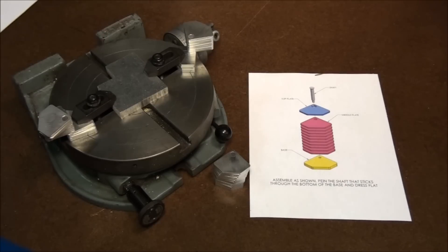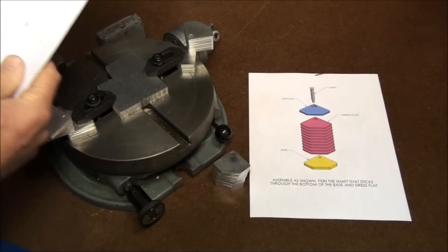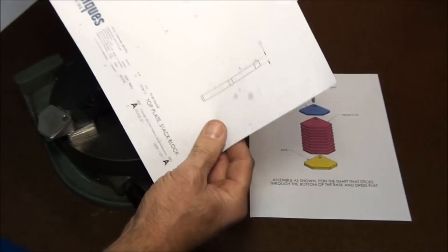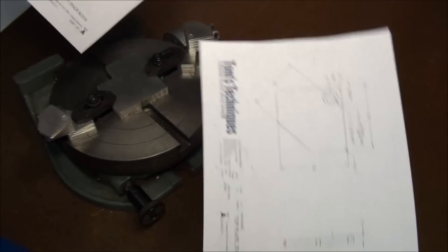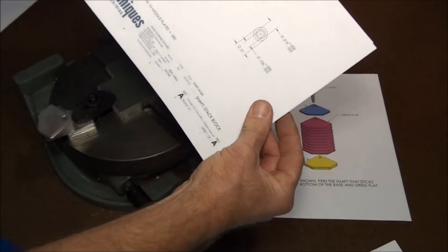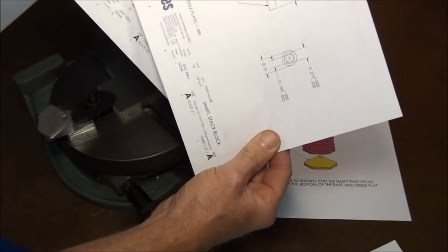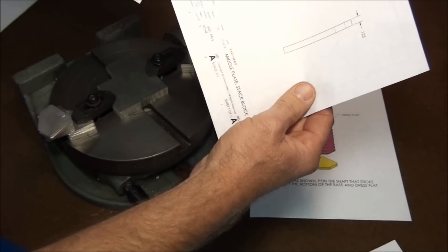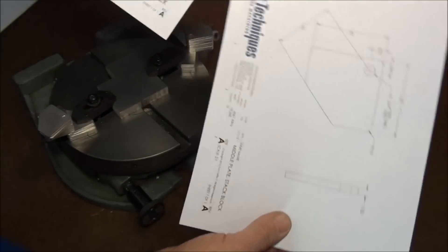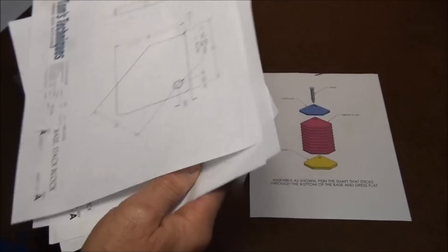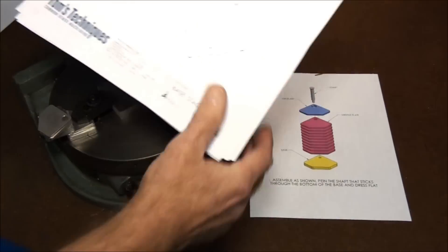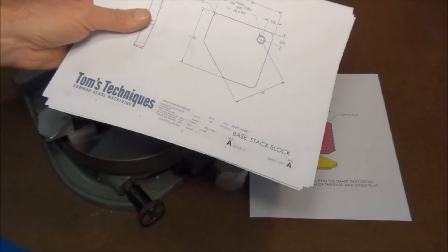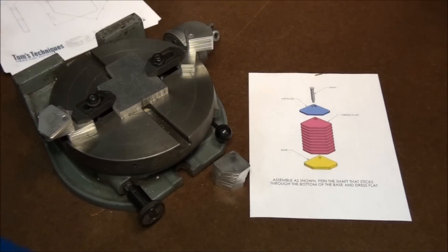So if you want to give it a try, here's the prints. Has a top plate, here's the shaft I was telling you about, the prints are kind of marked up because I've already built a set of these, I've built these from these prints. The middle plates, ten of those, base plate. So if you're interested in this project, these prints are available on my website, tomstechniques.com. Just buzz over there, you can download a PDF copy and follow along.